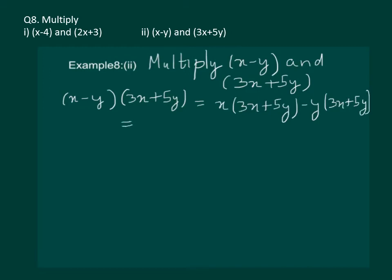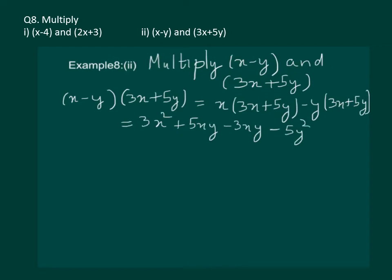Solving this further: x multiplied by 3x is 3x square. Plus x multiplied by 5y is 5xy. Minus y multiplied by 3x is minus 3xy. Minus y multiplied by 5y gives us minus 5y square. Clearly we have like terms, so combining them we get 3x square plus 2xy minus 5y square as the required answer.